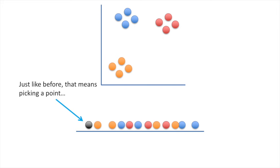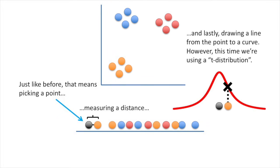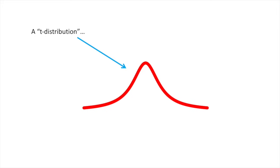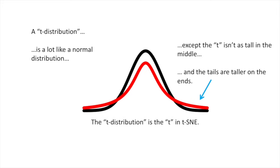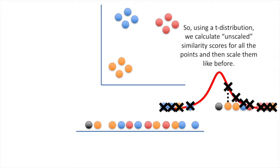Just like before, that means picking a point, measuring a distance, and lastly, drawing a line from the point to a curve. However, this time we're using a t-distribution. A t-distribution is a lot like a normal distribution, except the t isn't as tall in the middle, and the tails are taller on the ends. The t-distribution is the t in t-SNE. We'll talk about why the t-distribution is used in a little bit. So, using a t-distribution, we calculate unscaled similarity scores for all the points, and then scale them like before.